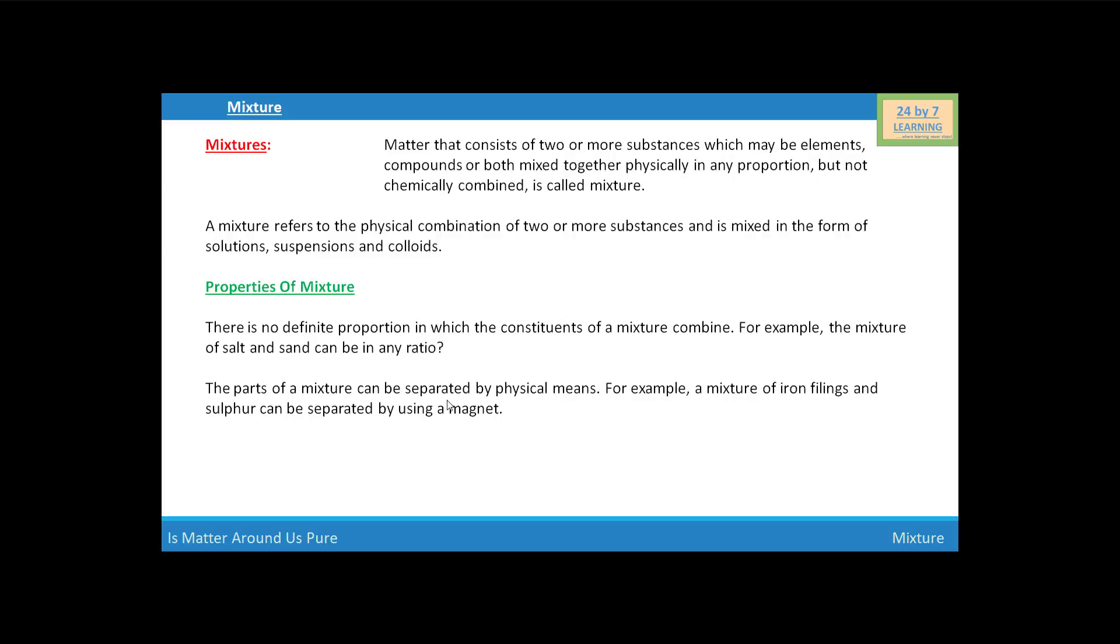The parts of a mixture can be separated by physical means. For example, a mixture of iron filings and sulfur powder can be separated by using a magnet because iron possesses the magnetic property, so we can easily separate iron filings by using magnet from the sulfur powder.